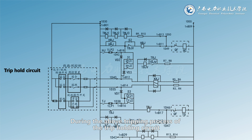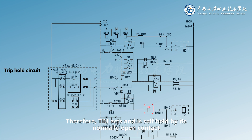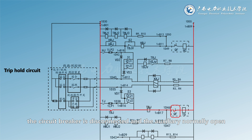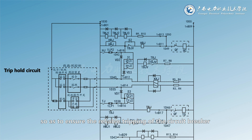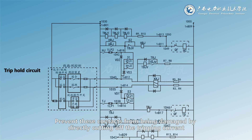During the above tripping process, whether manual tripping or automatic tripping of the protection device, the tripping current will flow through the coil of the trip holding relay TBJ. Therefore, TBJ acts and is self-held by its normally open contact. The tripping current can flow from the normally open contact of TBJ to the tripping coil of the circuit breaker until the main contact of the circuit breaker is disconnected and the auxiliary normally open contact is also disconnected. This ensures reliable tripping of the circuit breaker and protects the contacts of local operation switches, measurement and control devices and protection devices from damage caused by directly cutting off the tripping current.